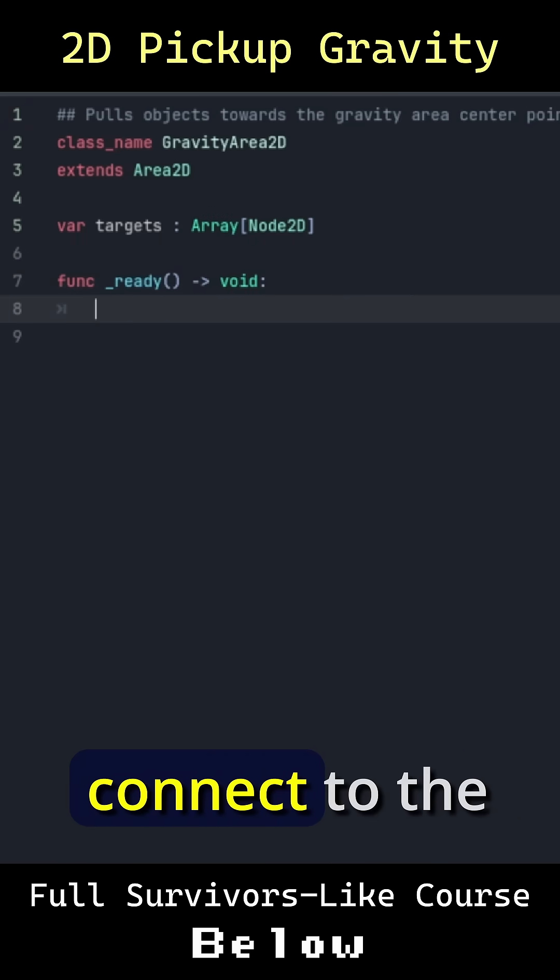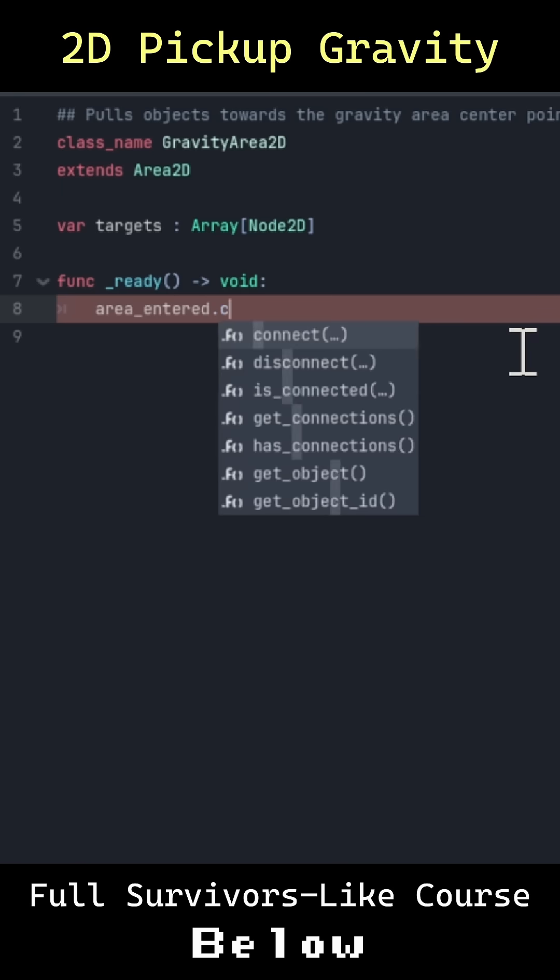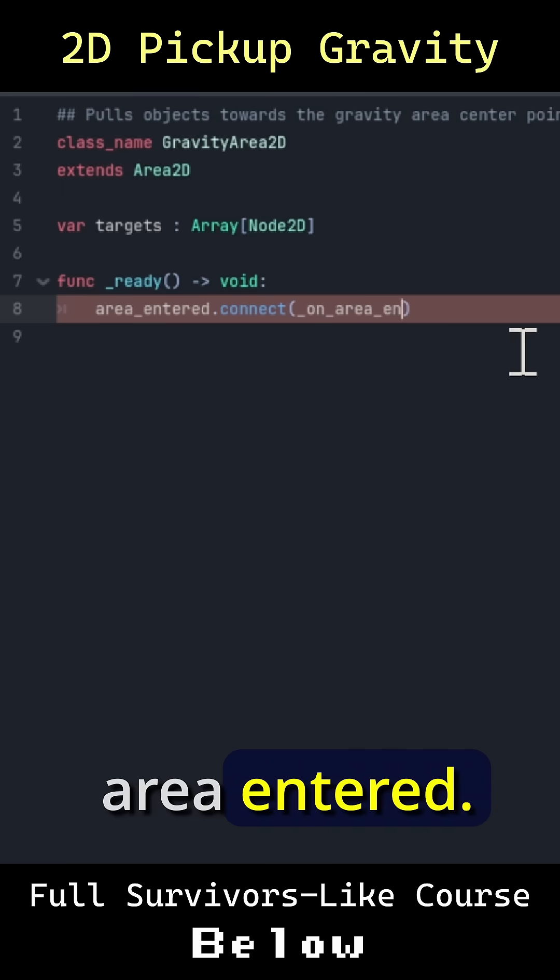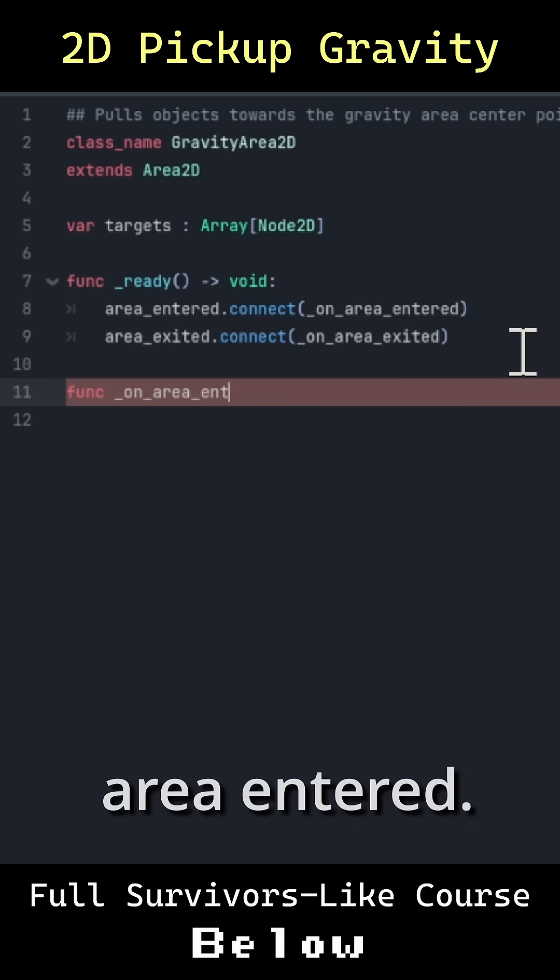On function ready we want to connect to the signal of this Area2D. So we're going to say area_entered.connect(_on_area_entered) and we'll also connect to the area_exited(_on_area_exited).